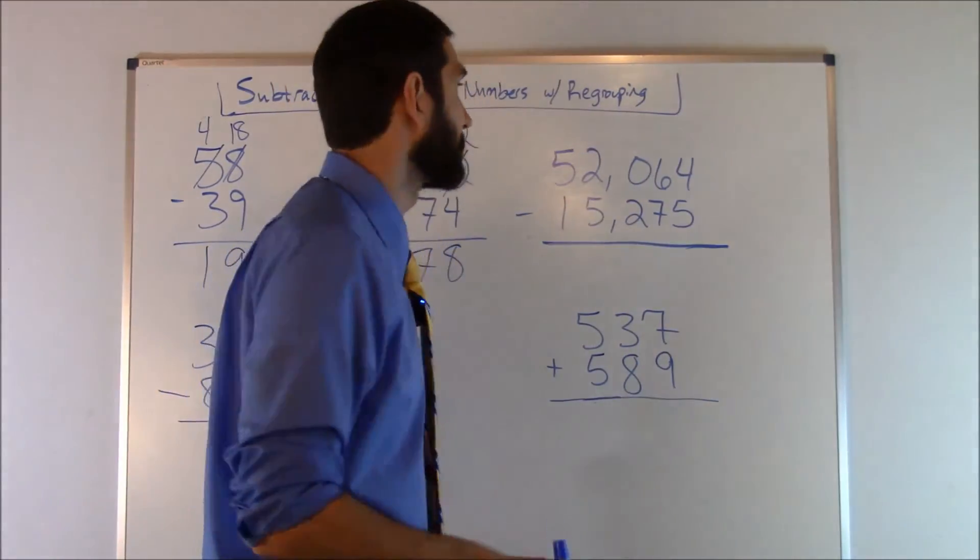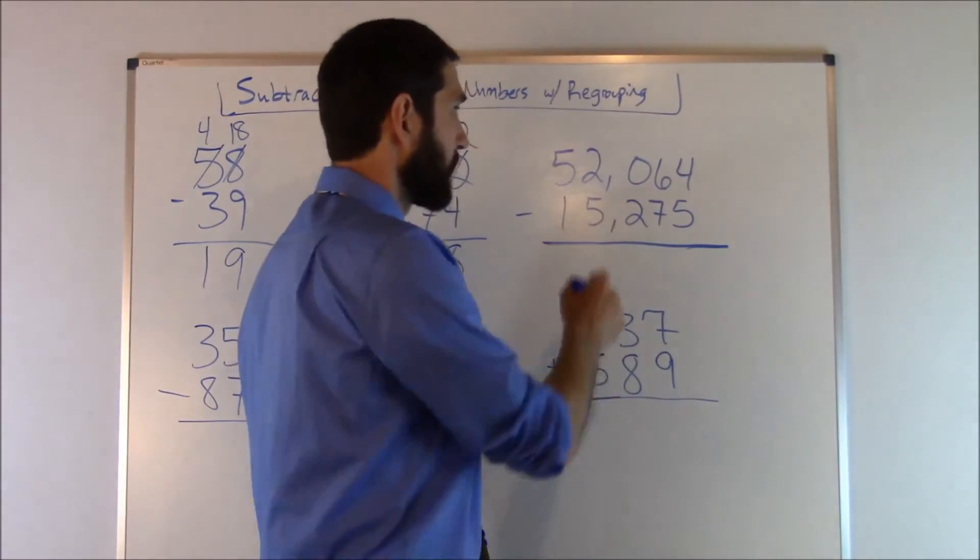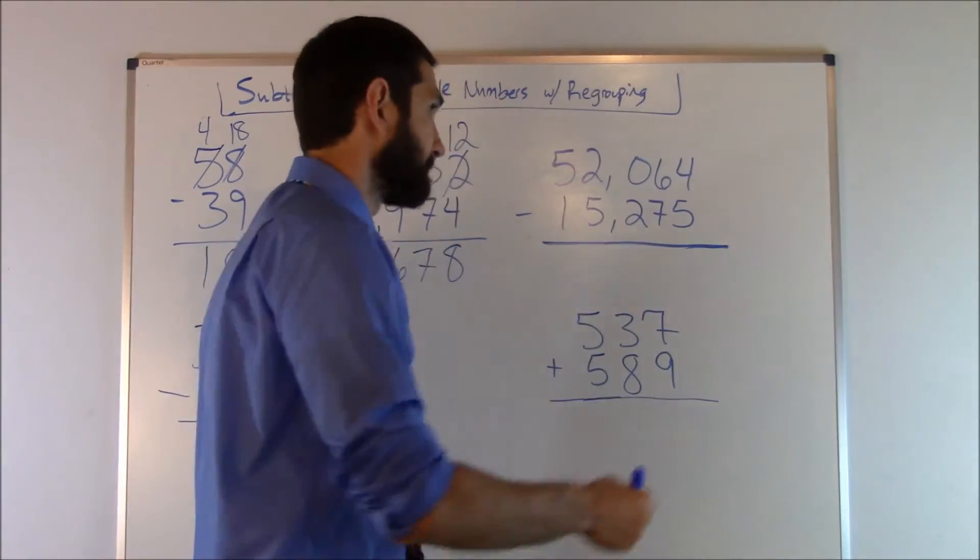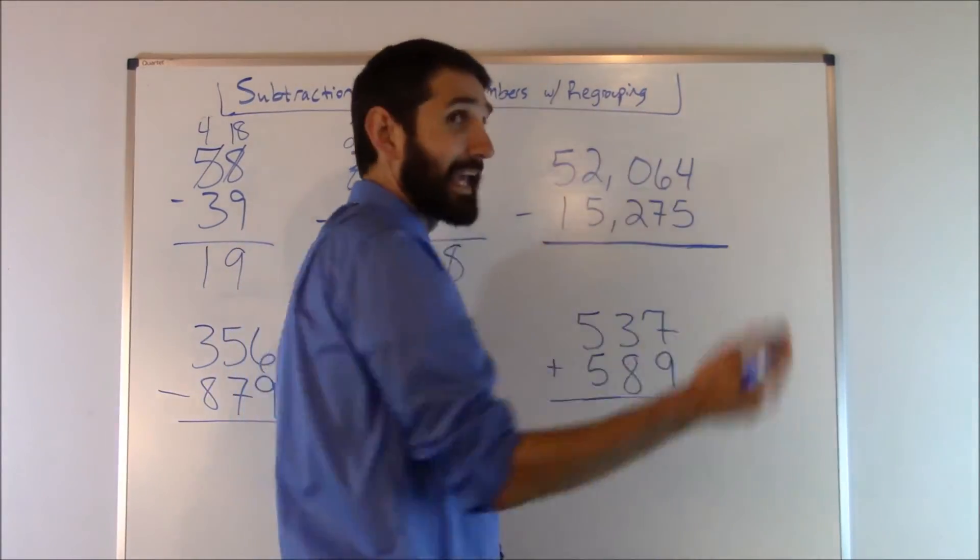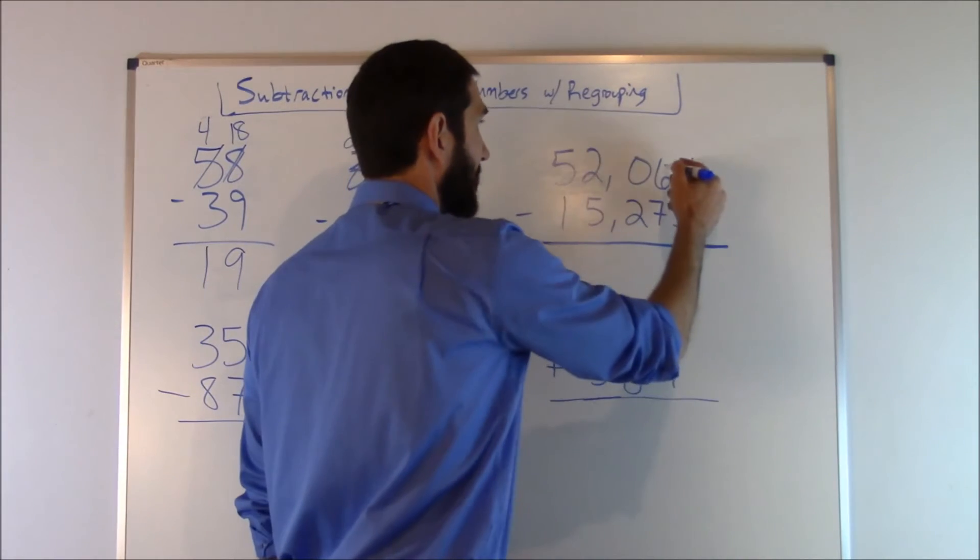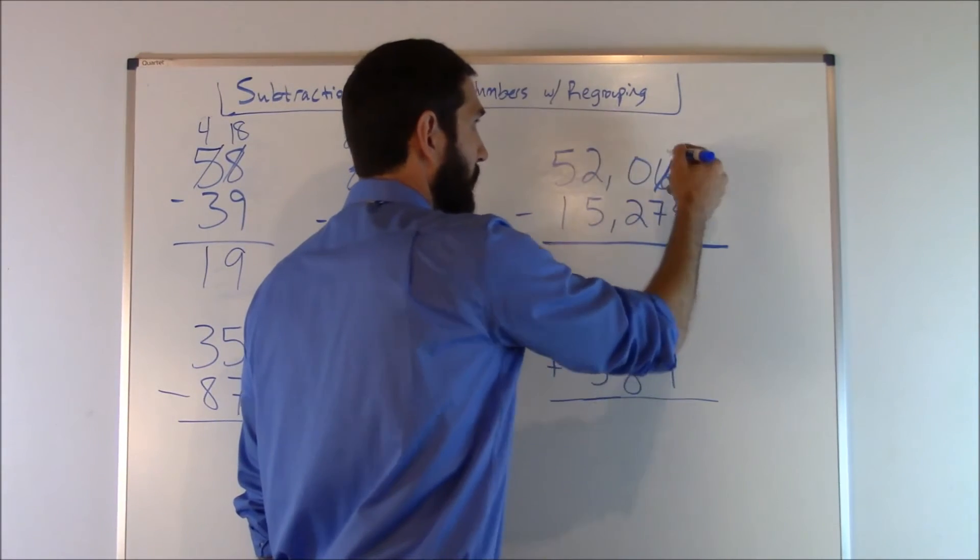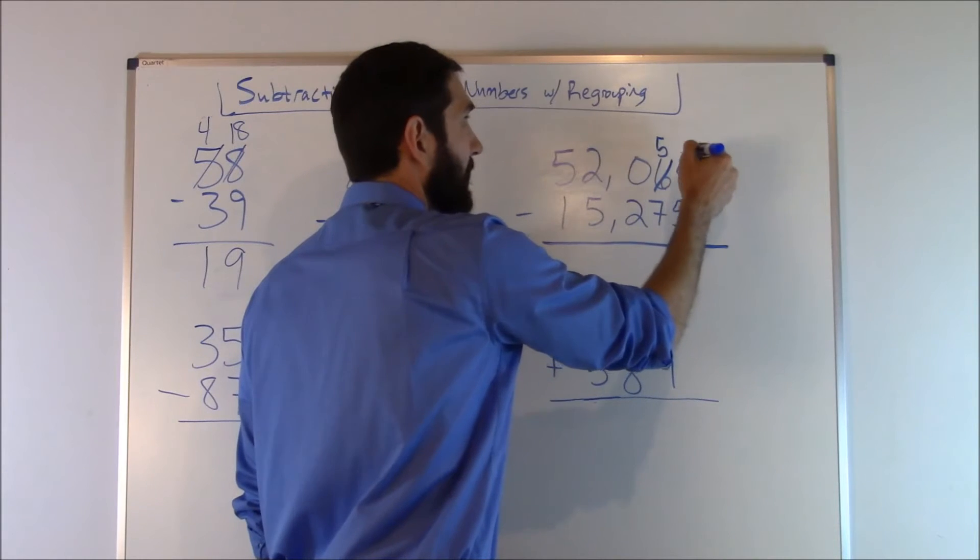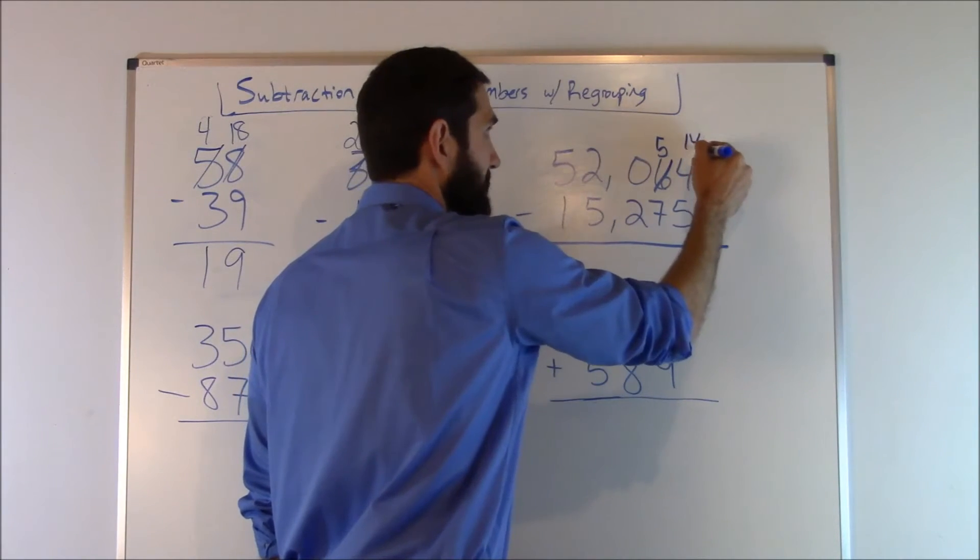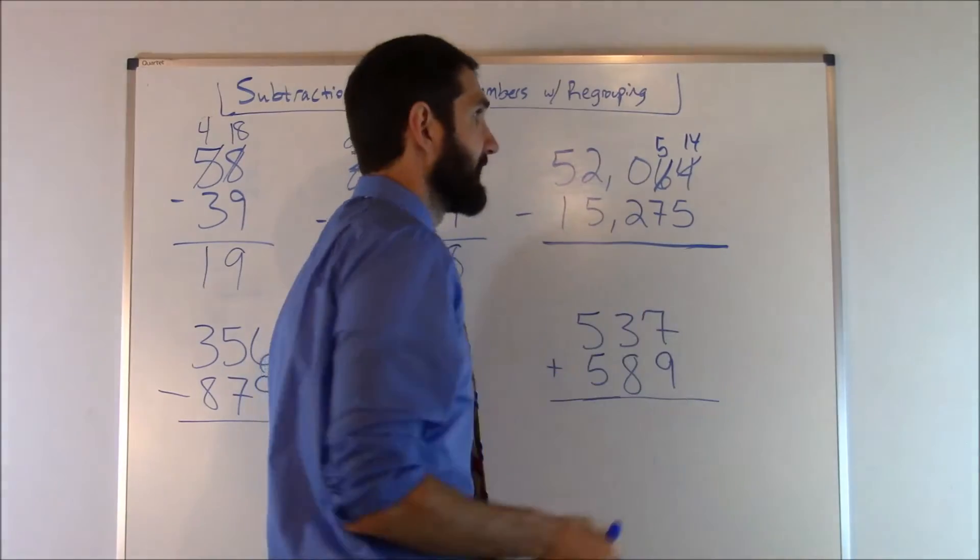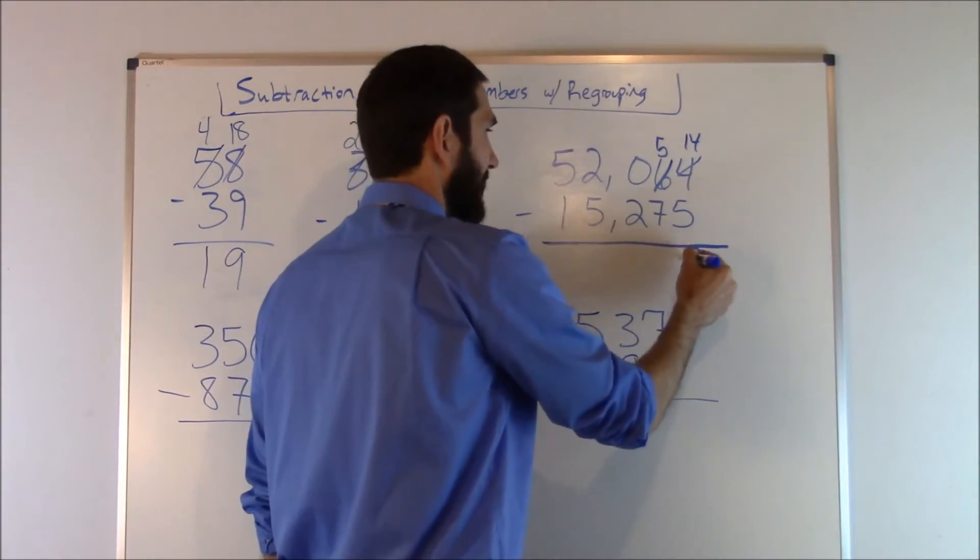Now let's work one that's a little bit longer: 52,064 minus 15,275. Four minus five, we can't do it. So we got to bum off the neighbor. We go to the six, we take one away from that. That's going to make that a five. We come back here, add ten to the four. That's going to give us a 14. 14 minus five. That's nine. So we put the nine there.